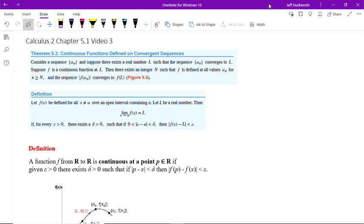It reads: consider a sequence A_N, and suppose there exists a real number L such that the sequence A_N converges to L. So we're given some information here. We know that the sequence A_N converges to L. That's what's given, and that L is a real number.